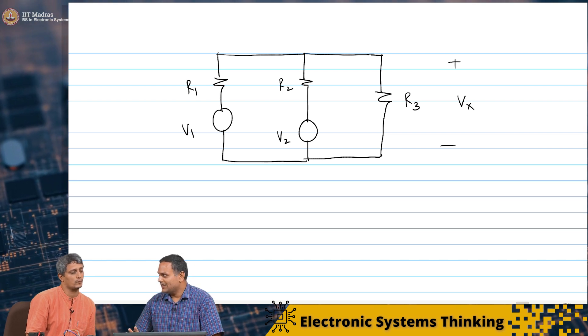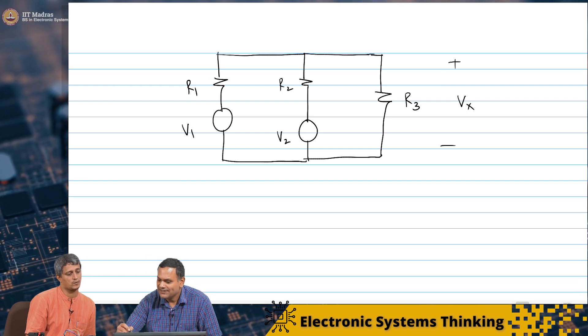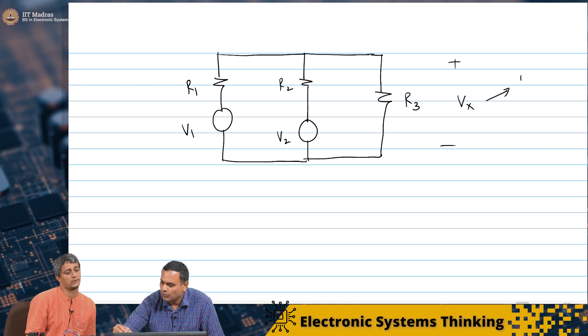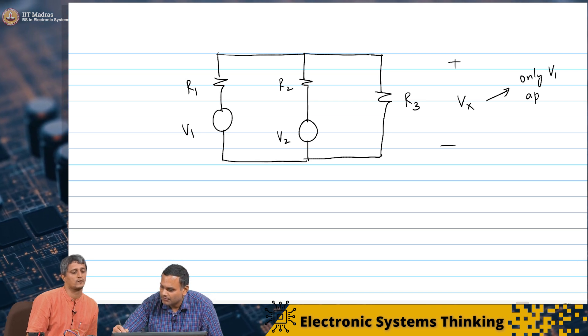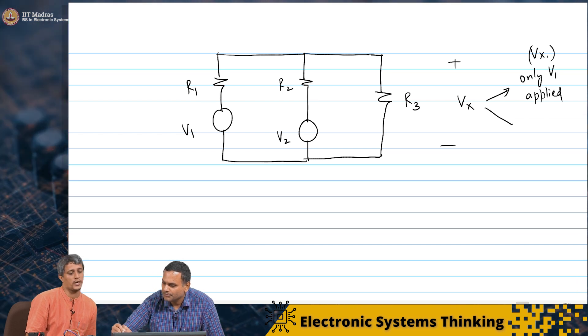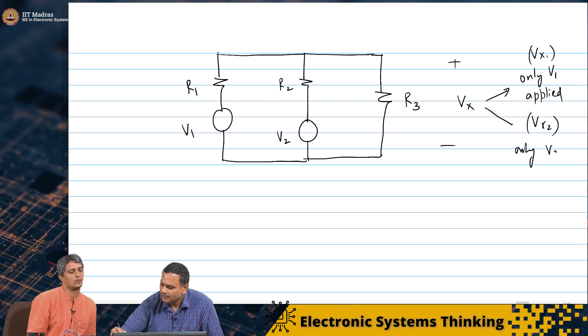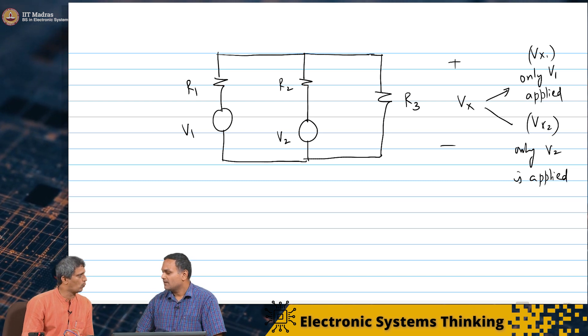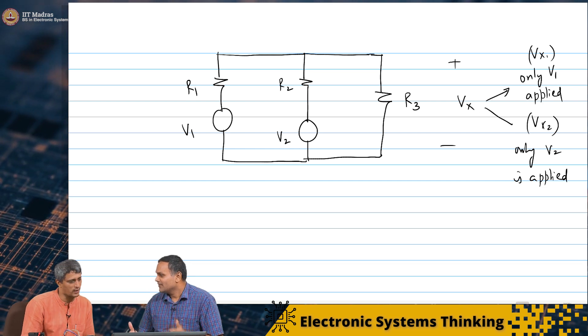So now we are actually interested in this voltage Vx across R3. So now what superposition is telling you? Is the output Vx has two components. One component when only V1 is applied, and another component when only V2 is applied. So when you mean only V2 is applied, it means V1 is 0. V1 is 0 and that means we saw it is replaced by a wire, short circuited.